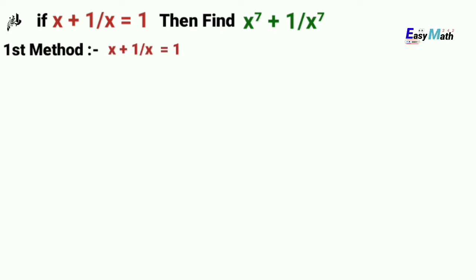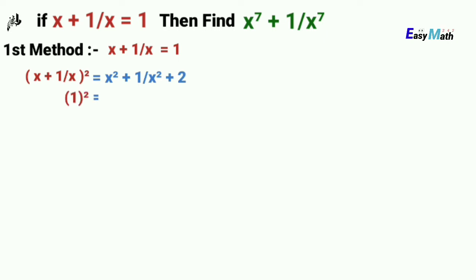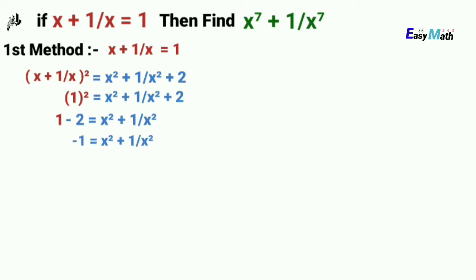As we know that the square of x plus 1 over x equals x squared plus 1 over x squared plus 2. Since we are given that x plus 1 over x equals 1, after these two simple steps, the value of x squared plus 1 over x squared is minus 1.